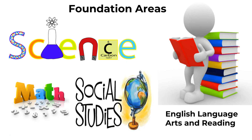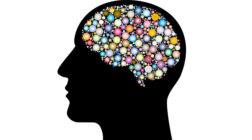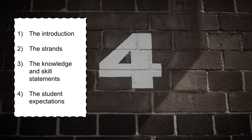There are four foundational content areas within the TEKS, which include English language arts and reading, math, science, and social studies. There are also TEKS for non-core subject areas such as fine arts, physical education, career and technical education, languages other than English, and health. No matter the content area, each set of TEKS has four parts: the introduction, the strands, the knowledge and skill statements, and finally the student expectations.